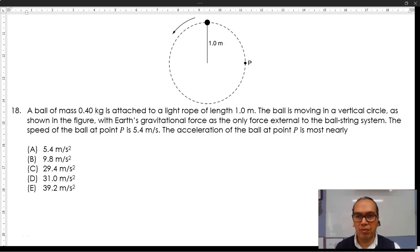18. A ball of mass 0.40 kg is attached to a light rope of length 1.0 m. The ball is moving in a vertical circle, as shown in the figure,